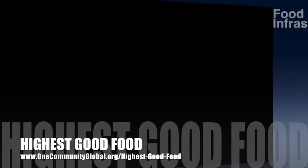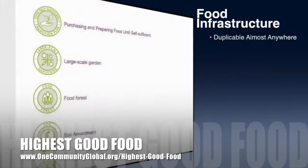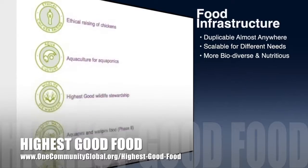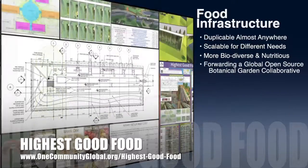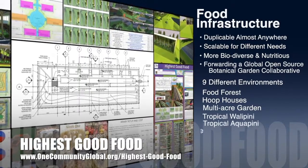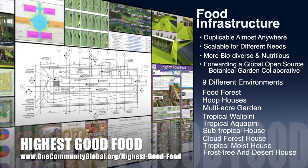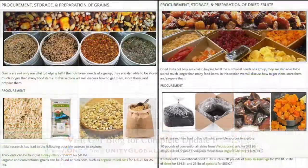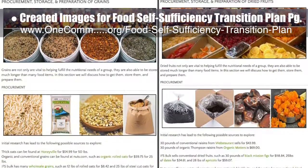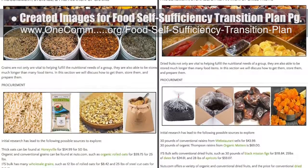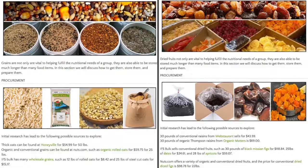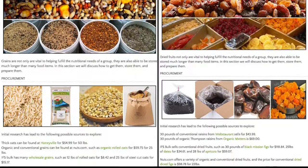OneCommunity's approach to highest good food is duplicable almost anywhere, scalable for different needs, more biodiverse and nutritious, part of forwarding a global open-source botanical garden collaborative, and includes nine different free-shared and duplicable growing environments. This week, the core team created two new sections under Bulk Goods on the Food Self-Sufficiency Transition Plan page — one section for grains and one for dried fruits — and added the images and procurement details shown here.